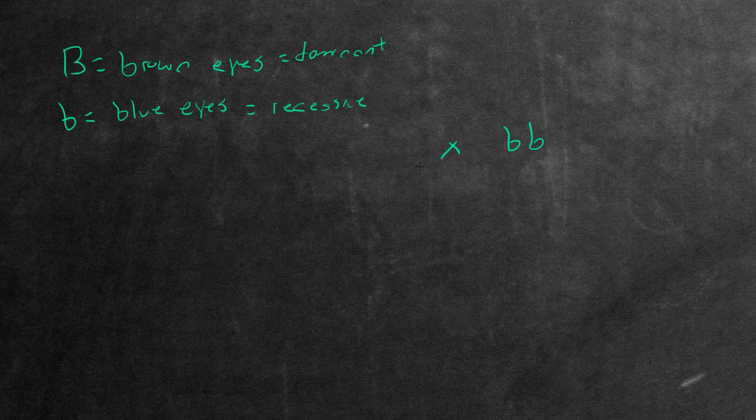Now it says this is crossed with a person who has brown eyes. Brown eyes, because it's dominant, can either be heterozygous or homozygous dominant. But to figure out what genotype the other parent has, it gives us a hint in the other part of the question: it produces offspring that is blue-eyed. So this cross with a brown-eyed person gives offspring that also has blue eyes.